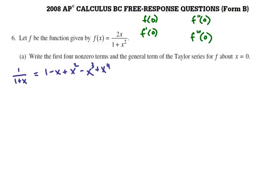And so that just looks like 1 minus x plus x squared minus x cubed plus x to the fourth. And the general term is just negative 1 to the n, or you could write it as negative x to the n. But I'll separate out that negative 1 to the n because that's going to stay the same when we start to transform.